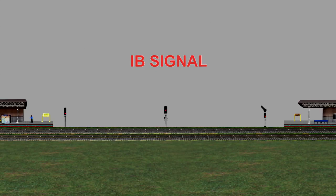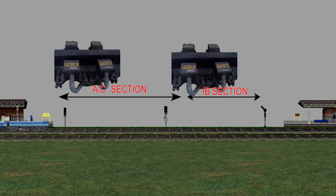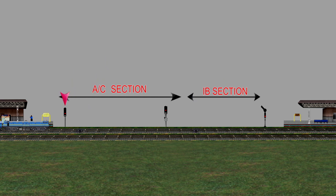On double line, a lengthy block section between two stations is divided into two portions: the axle counter section and the IB section, by placing an intermediate block signal. Two sets of axle counters are provided — one after the last stop signal of the station and another at 400 meters after the IB signal. This portion is known as the axle counter section.